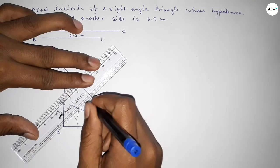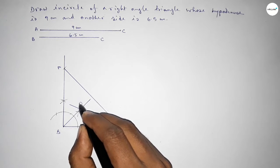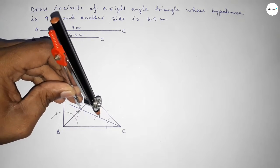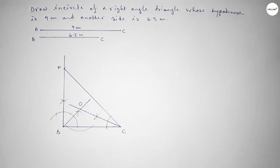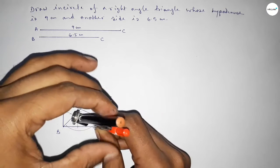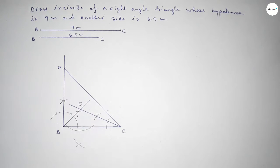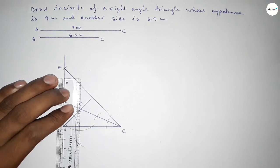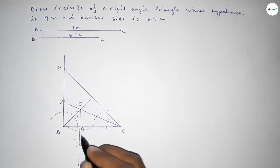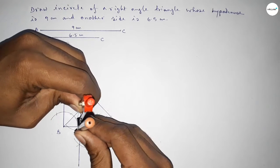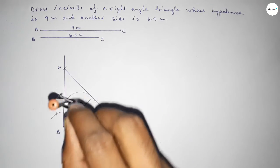Joining the bisectors — both bisectors intersect at point O, the incenter. Now we have to draw a perpendicular line from O to line BC. Taking any length and drawing an arc, then with the same length putting the compass and drawing arcs, joining to get the perpendicular line. This intersects BC at point D.